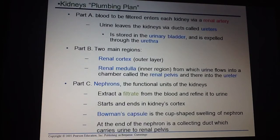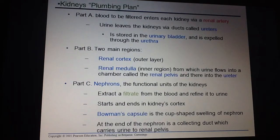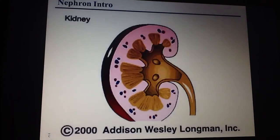The kidney filters everything via what's called the renal artery. It filters everything out, collects our urine — whatever we want to get rid of — travels it through the ureters, puts it into your bladder where it's stored, until eventually it leaves the body through the urethra. There are two main parts to a kidney that you can identify if you slice it open: the renal cortex, which is the dark outer layer, and the renal medulla, which is the inner region. The nephrons are the functional units in the kidney — the nephron is actually what does the filtration.